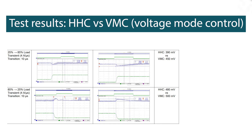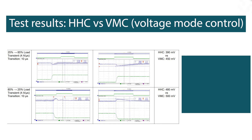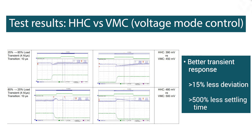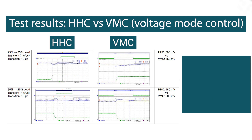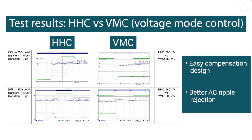Hybrid hysteretic control demonstrates better transient response. This picture shows the comparison between HHC and VMC in terms of voltage deviation with a 60% load step response. It also enables easy compensation design and better AC ripple rejection.